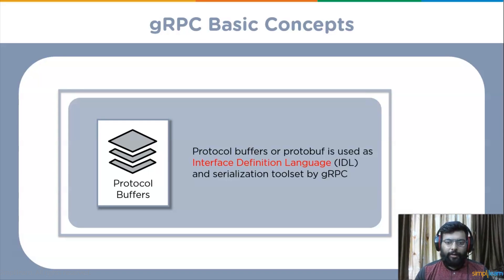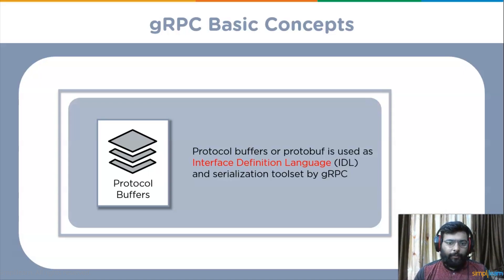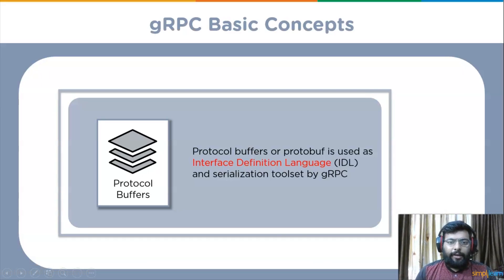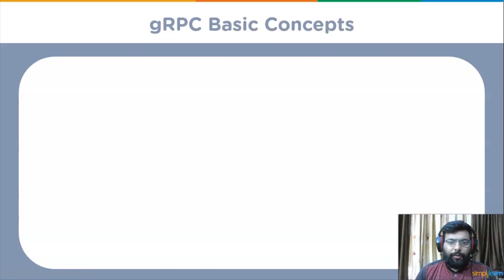gRPC stores your data and function contracts in the form of proto files. The protobuf compiler (proto-c) generates client and server code using the .proto file. It loads the code into memory at runtime and uses the in-memory schema to serialize or deserialize binary messages. You can exchange data faster with protobuf as it requires fewer CPU resources, since data is converted into a binary format and encoded messages are smaller in size.